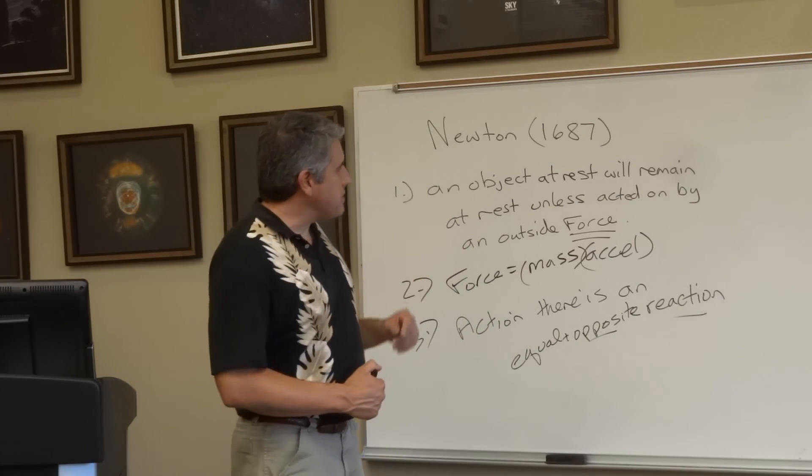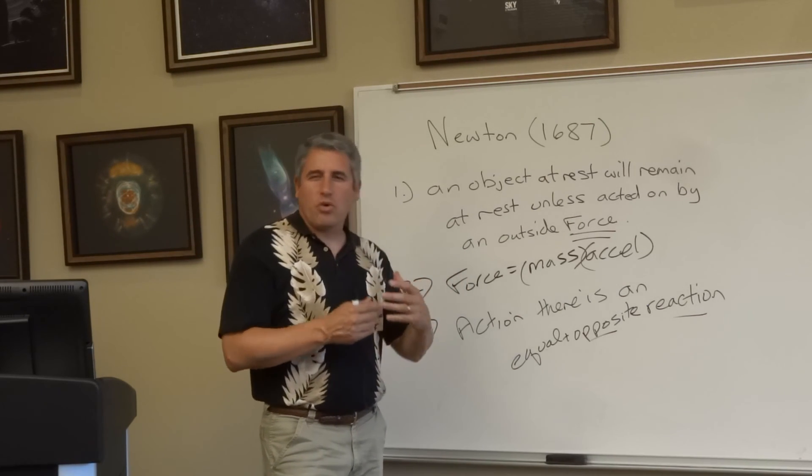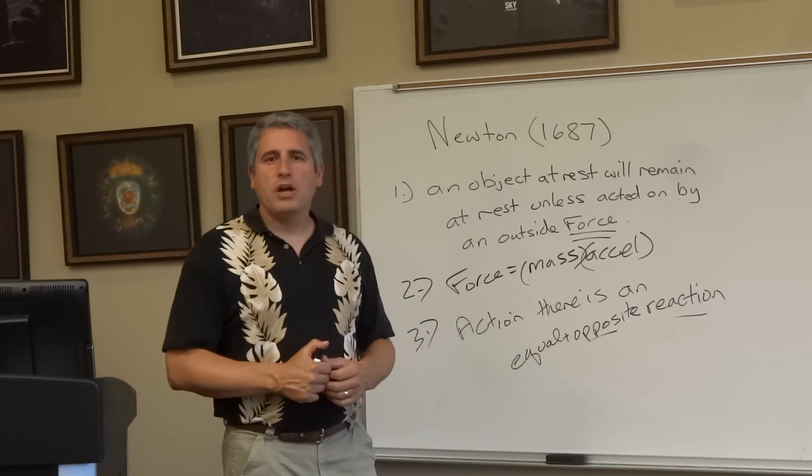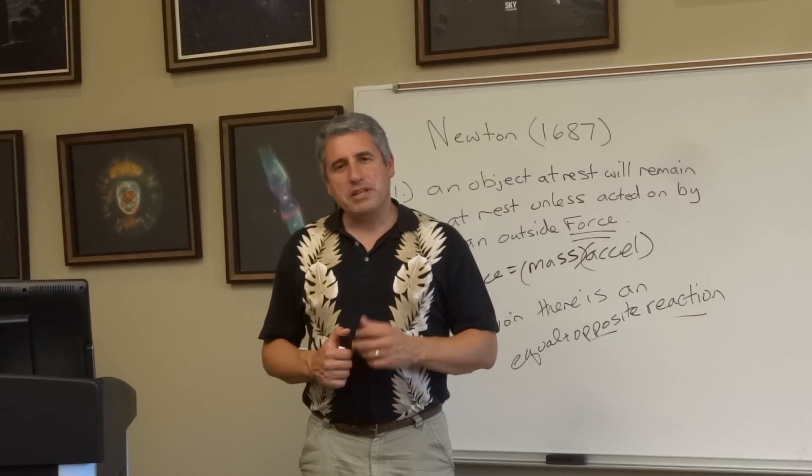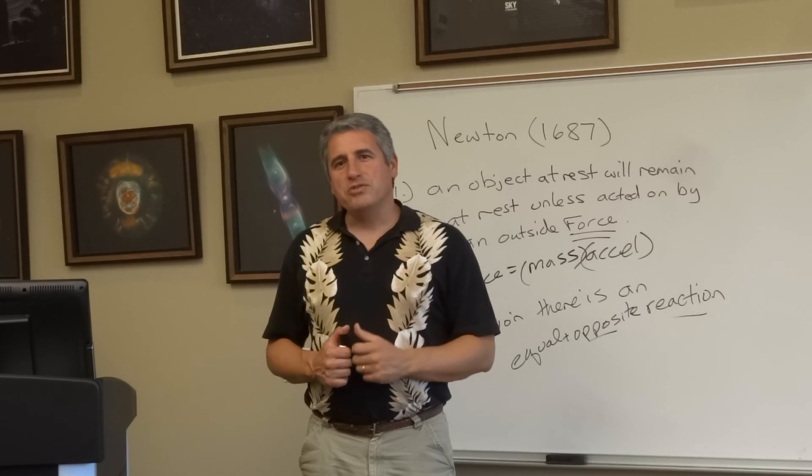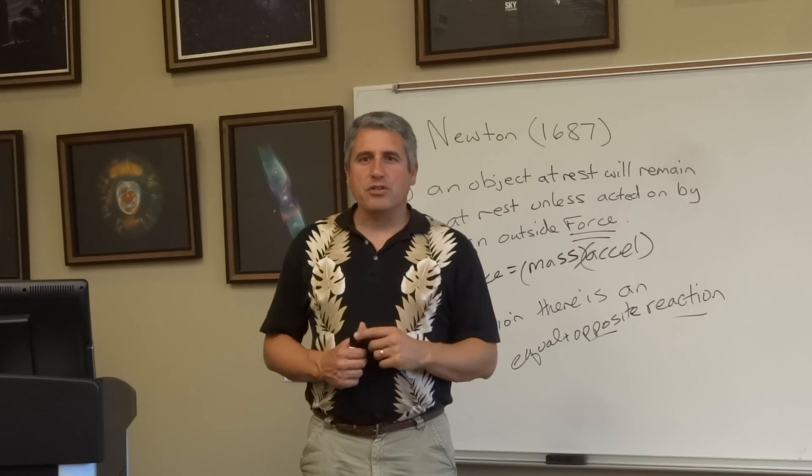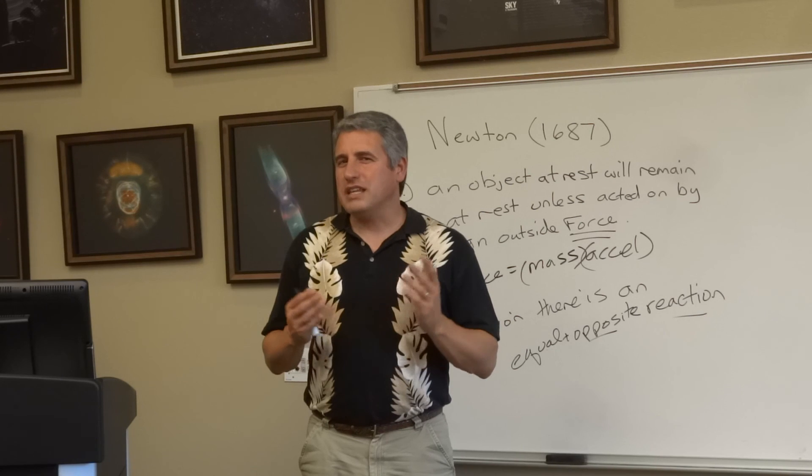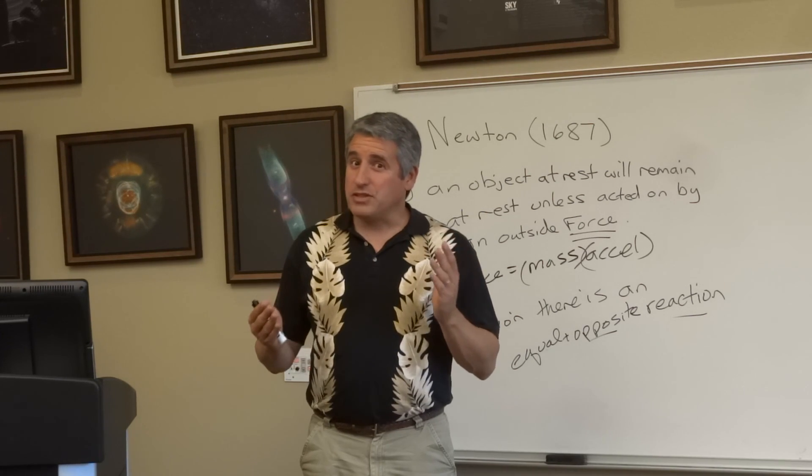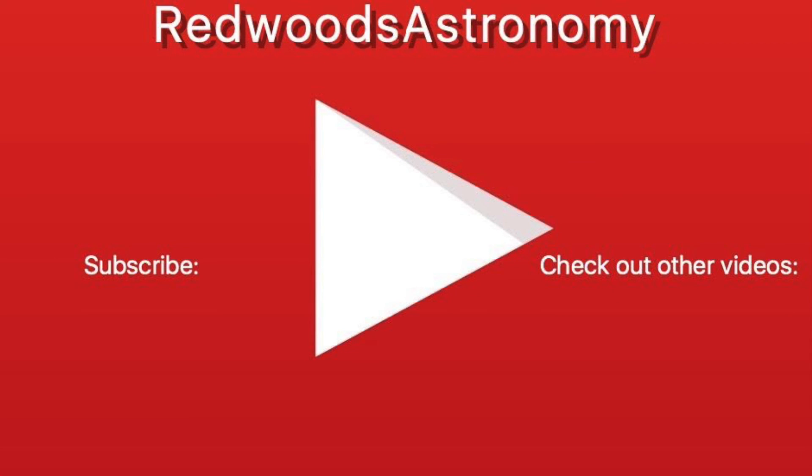What we're going to discuss next is now that we've got a handle on where things sit in the solar system, how things orbit, what forces are pulling on them, we're going to talk about how we gather information. The best way to do that is to make use of light. We've talked about the speed of light earlier in the discussions. What we're going to do now is talk about what is the nature of light and what makes different types of light different.